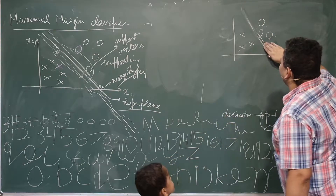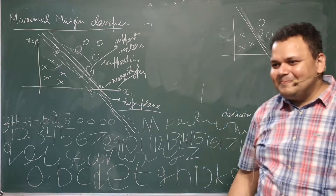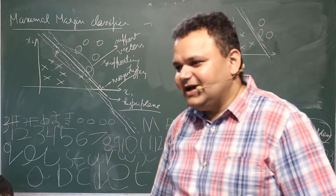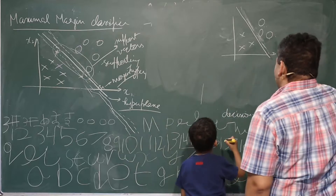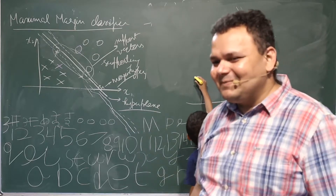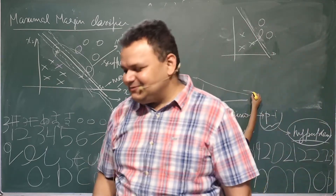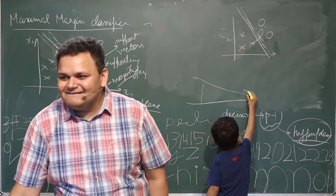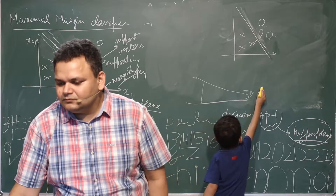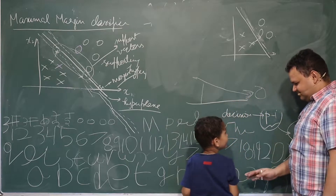To maximize your margin, where do you draw your hyperplane? You draw it so that both distances are equal — yes, they are equal and then the maximum will come to you.